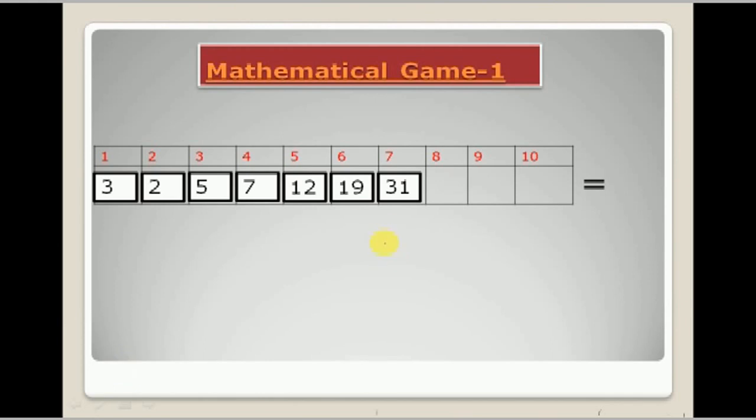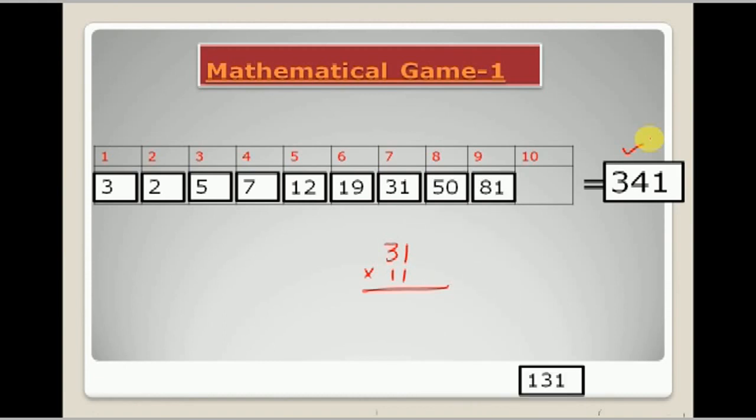I just multiplied this 31 by 11, and which was 341. Then I told you to write in all the boxes.